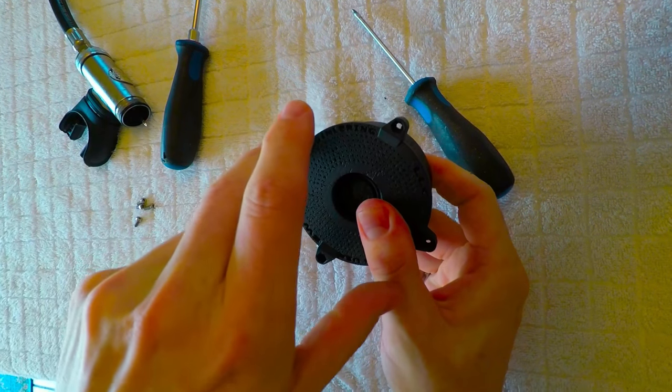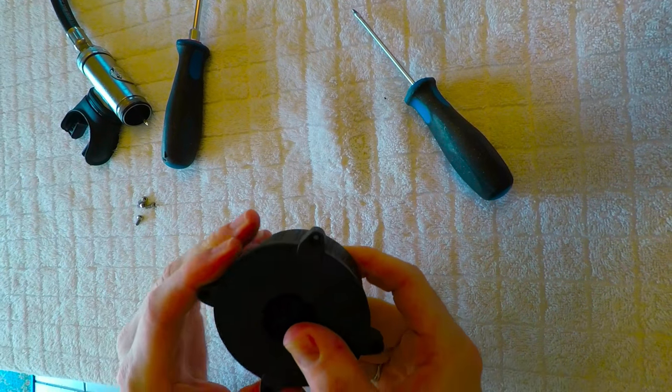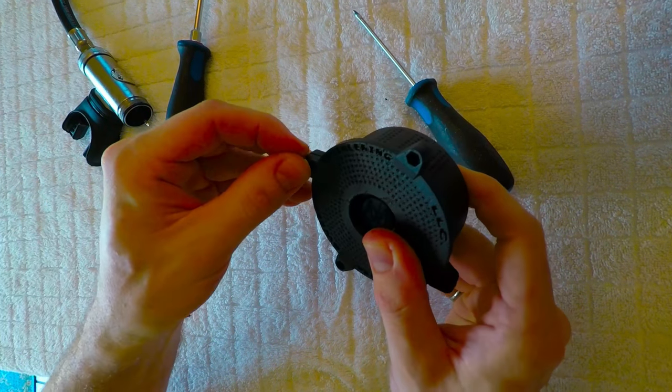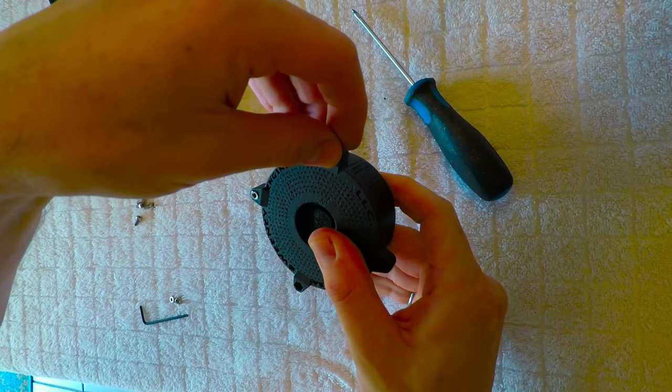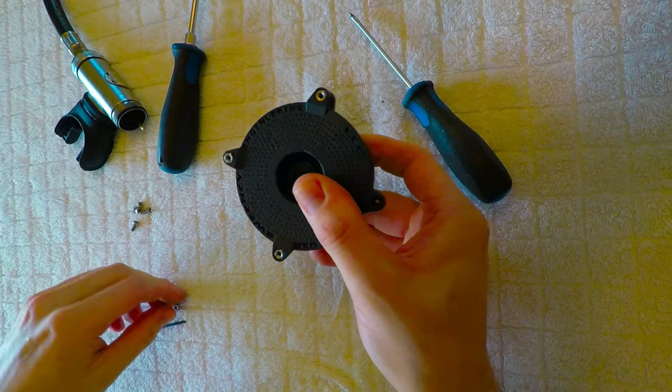It does go on one way, so if you have it off by 90 degrees, you will notice that they don't line up perfectly. Now you can place your stainless steel nuts in the countersunk grooves for them.